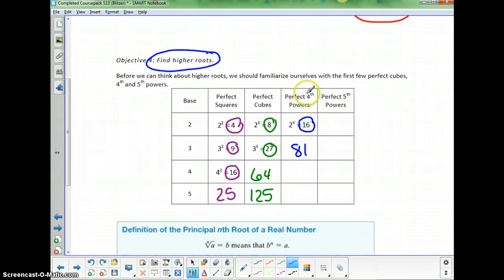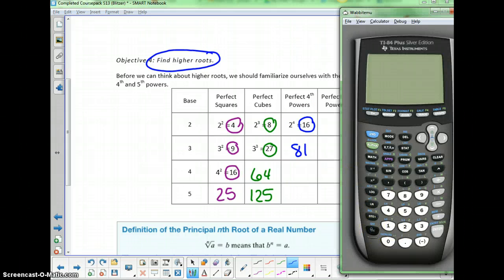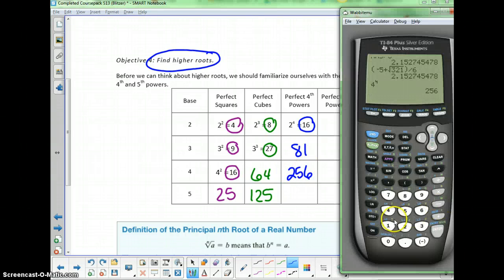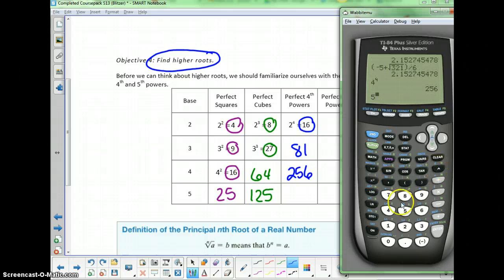We're in the middle of a list of perfect fourth powers. 2 to the fourth is 16, 3 to the fourth is 81, 4 to the fourth is 256, and 5 to the fourth is 625.